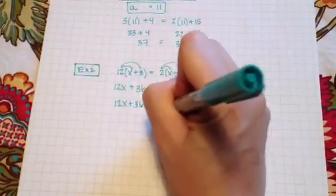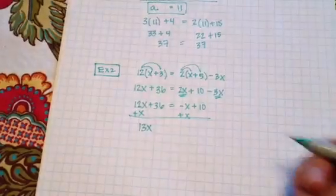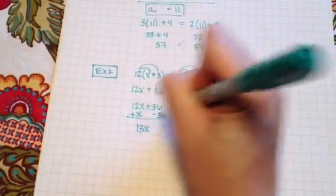Now I'm going to add x to both sides, that gives me 13x on this side on the left and I'm going to take away 36 from both sides.